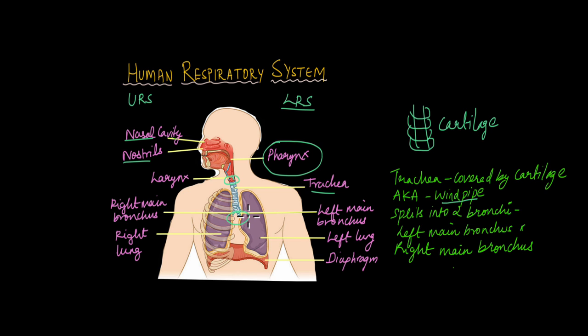Now the trachea at the lungs splits into two and each of these two branches is known as a bronchus. So the trachea splits into the right main bronchus and the left main bronchus.